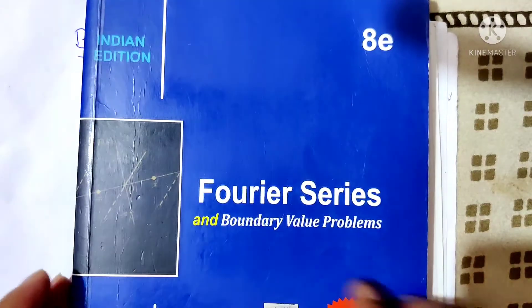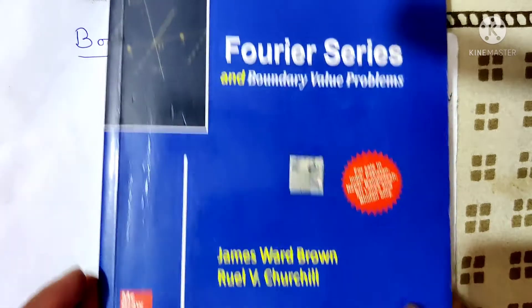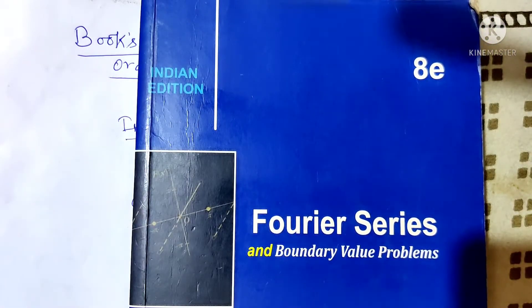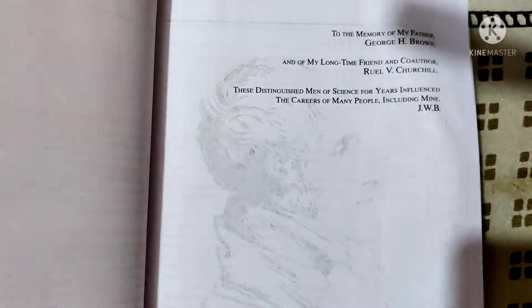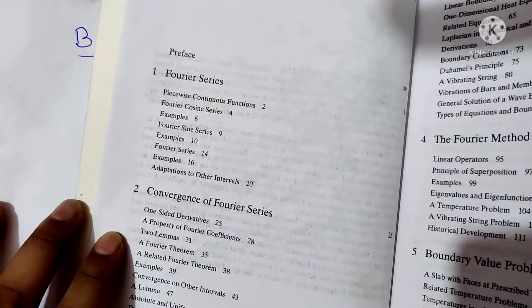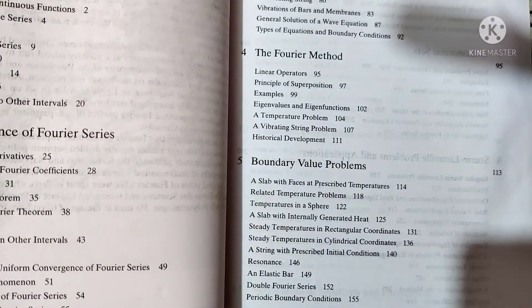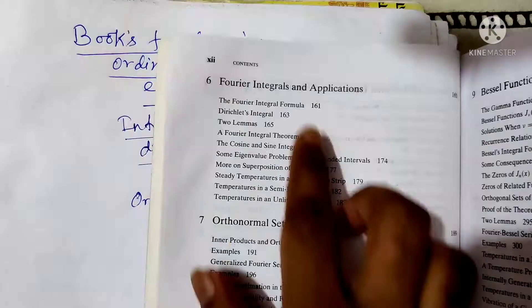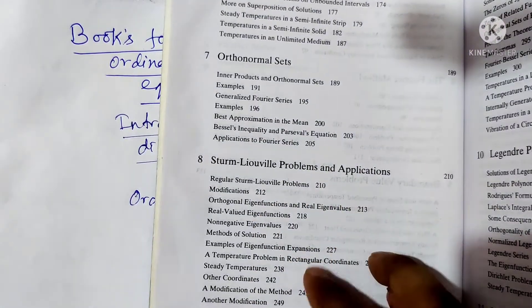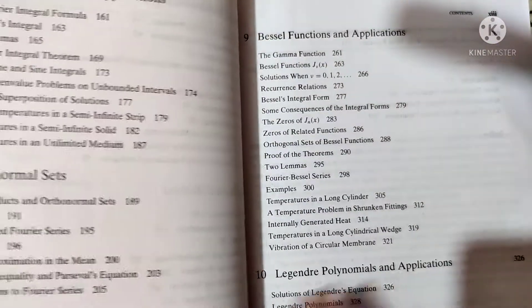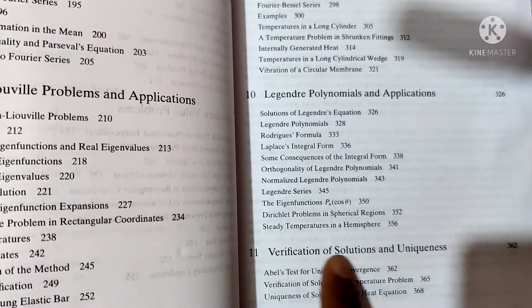Next book: 'Fourier Series and Boundary Value Problems' by James Ward Brown and Ruel Churchill. This is only for boundary value problems and is also a great book. If you are a research student or want to research in mathematical physics, then this is a great choice. It covers Fourier series, convergence of Fourier series, partial differential equations — Fourier method, boundary value problems — how we find boundary value problems, how we reduce partial differential equations to ordinary differential equations, applications, orthonormal sets, Sturm-Liouville problems including singular and regular types, Bessel functions with applications, Legendre polynomial applications, verification of solutions, and uniqueness.